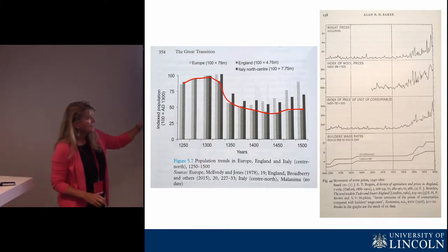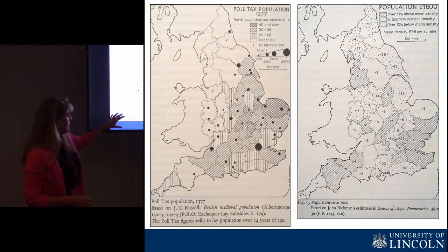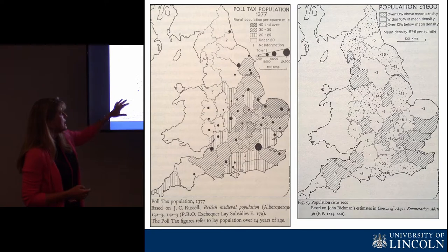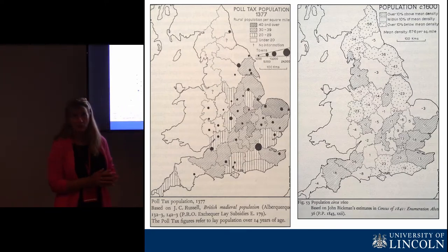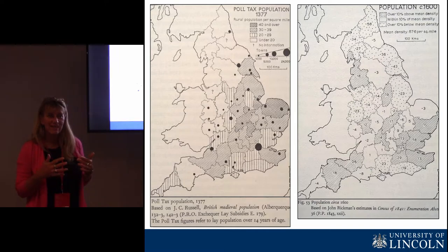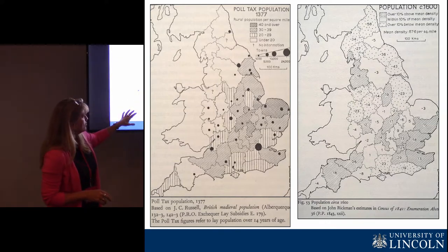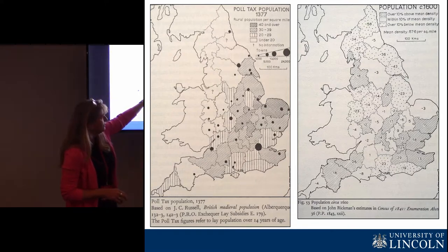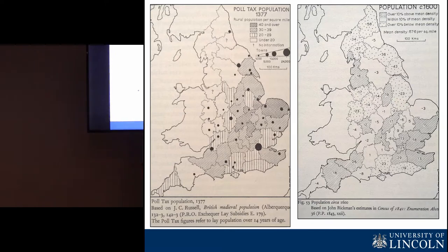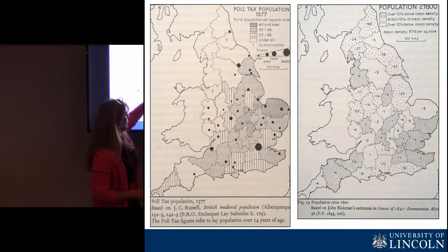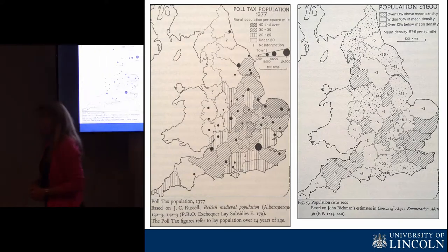When we look at other sorts of data, we can see — looking before this period — this is the 1377 poll tax, showing the approximate densities of population. Even given all the issues of using taxation data as a proxy for population, it's all we have. What you can see is that in the end of the 14th century the population densities are quite different to what we've got by about 1600. The area I'm going to be looking at is eastern England, where you can see quite a shift in the focus of population from the north of the area to the south.